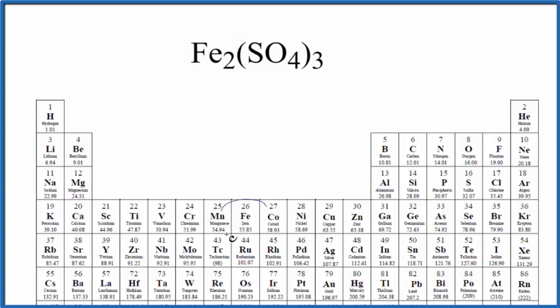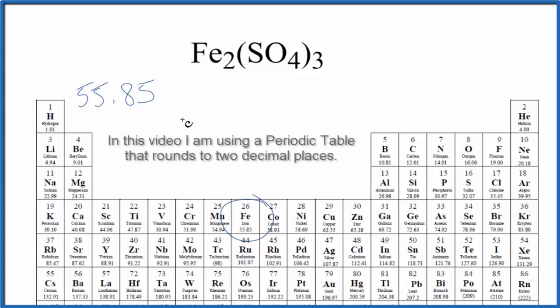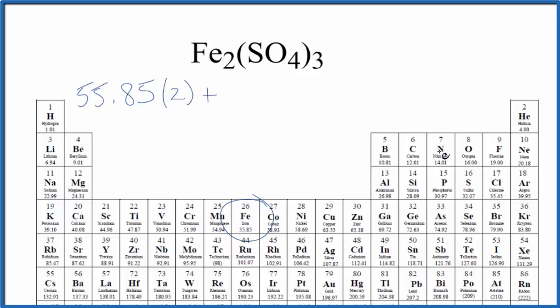On the periodic table, iron is 55.85 and the units are grams per mole. I won't write that each time. Let's write grams per mole at the end. We have two iron atoms so we'll multiply that by 2, plus sulfur is 32.07 grams per mole, oxygen 16.00.